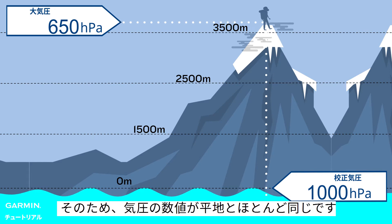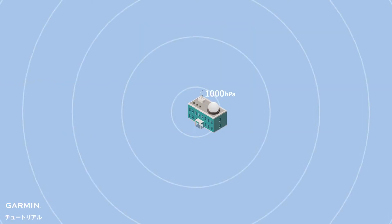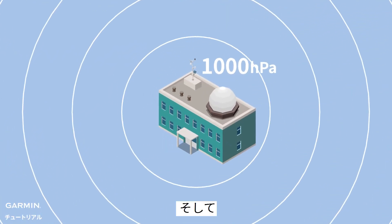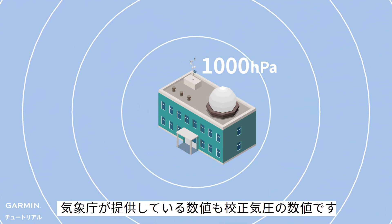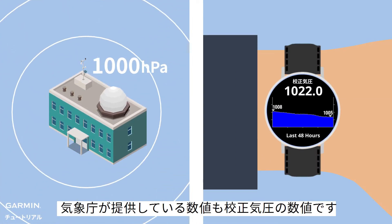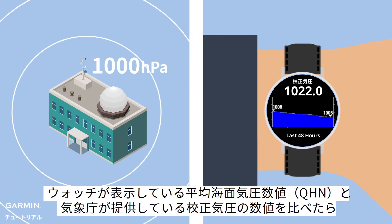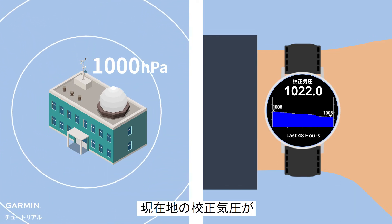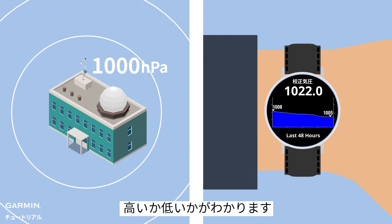The barometric pressure doesn't account for elevation — it only shows the mean sea level pressure of your location. That is why the barometric pressure doesn't change significantly. We should also know that the value the central weather bureau provides is the mean sea level pressure as well. Therefore, by comparing these two mean sea level pressures, you can know whether the atmospheric pressure of your current location is higher or lower.